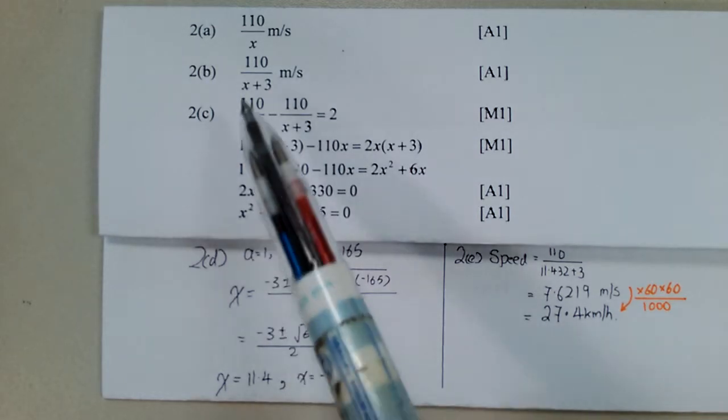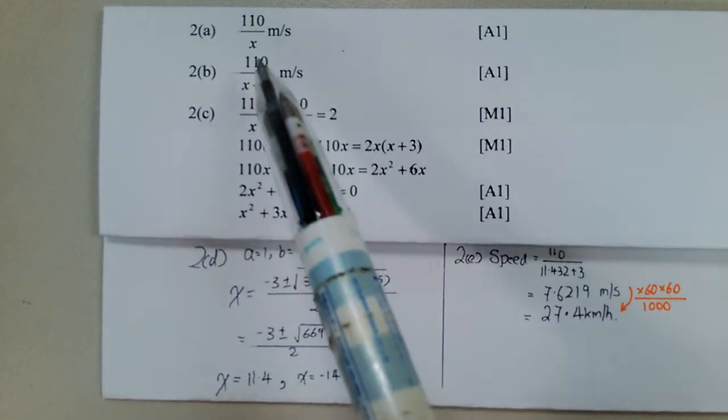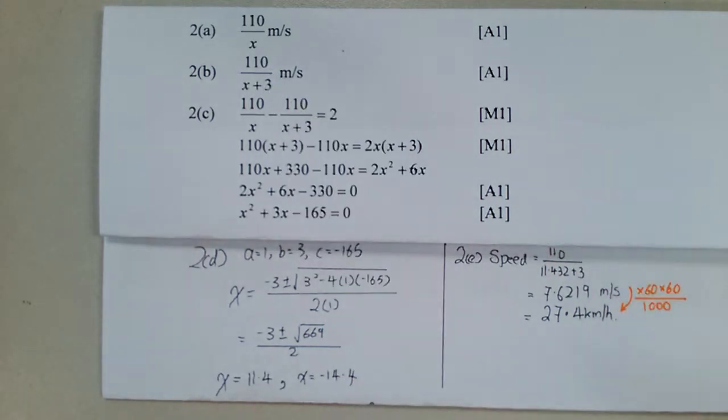Time increases by 3 seconds, so it becomes x plus 3. So the speed becomes 110 divided by x plus 3. We are then told in part C that the new speed is 2 meters per second slower than its original speed.